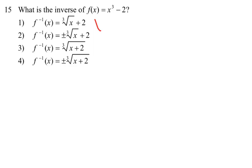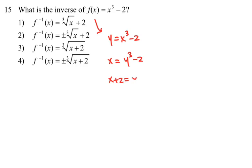Number fifteen: what is the inverse? You let f of x equal y, so y equals x cubed minus 2, then swap x and y and solve for y. Add 2 to both sides — x plus 2 equals y cubed — then y equals the cube root of x plus 2, which is choice 3.